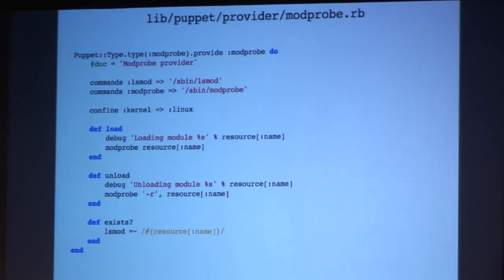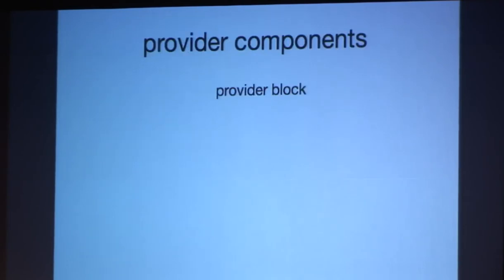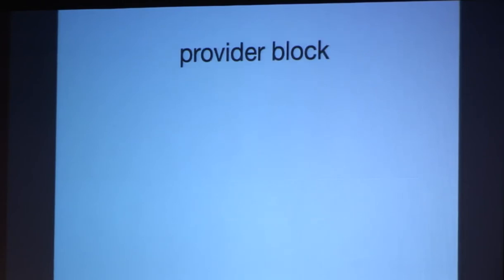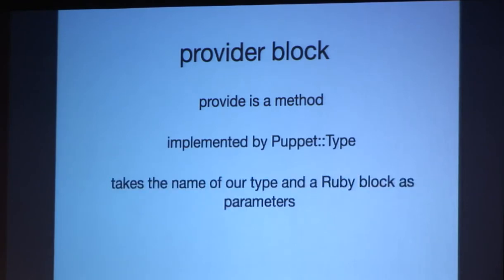So our actual provider looks something like this. And the key parts of this are going to be the provider block, the commands, confine, and the insurable methods. So the provider block is really similar to the new type block. It's a method. It actually lives in puppet type. It actually takes the name of our type and a Ruby block as parameters as well. So in the case of the provider, it actually looks something like this. And you'll see, there's the method. There's the name, and there's the do keyword indicating that we have a block.